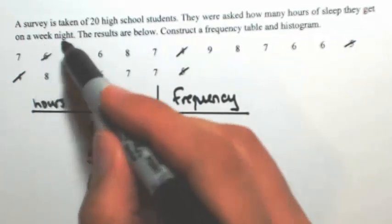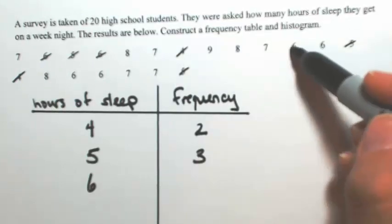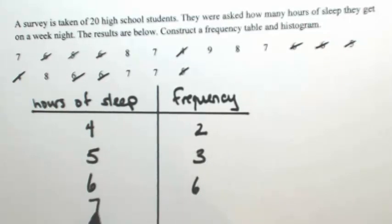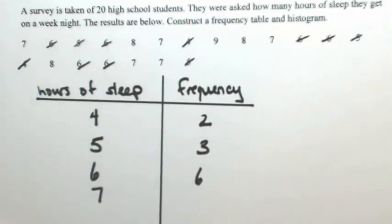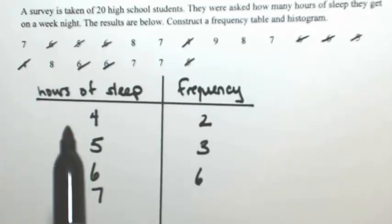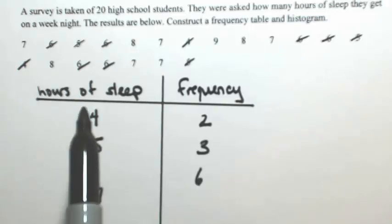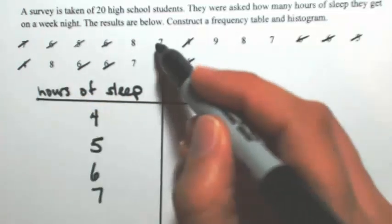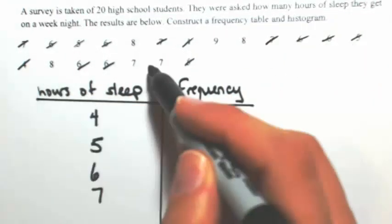6 hours appeared 1, 2, 3, 4, 5, 6 times. The next number is 7. As a little side note, if 7 didn't appear in the data, you would still need to mark it out and say it has a frequency of 0. Make sure all numbers are accounted for from your smallest to your largest number. So we're still going to look for 7 — that appeared 1, 2, 3, 4, 5 times.